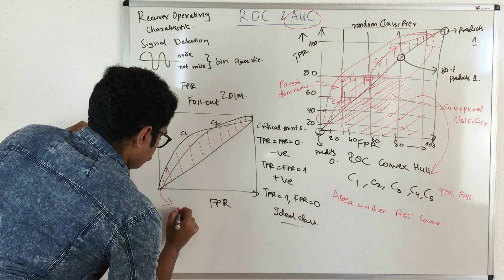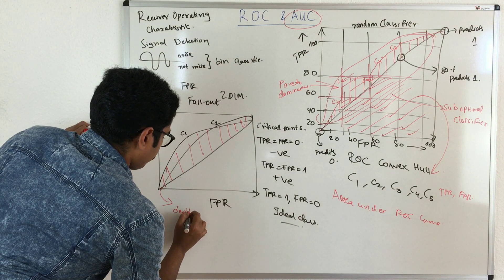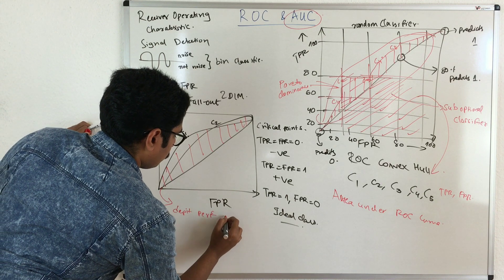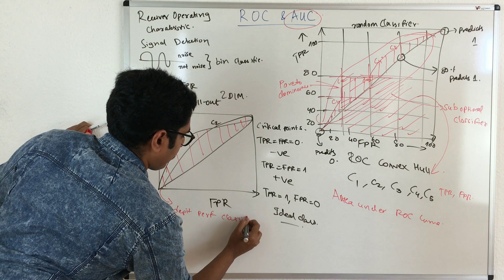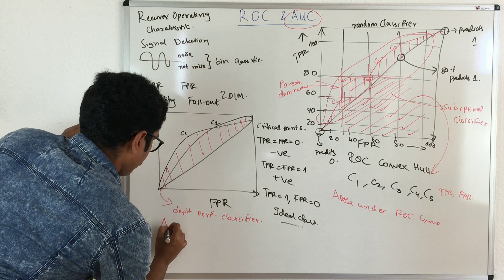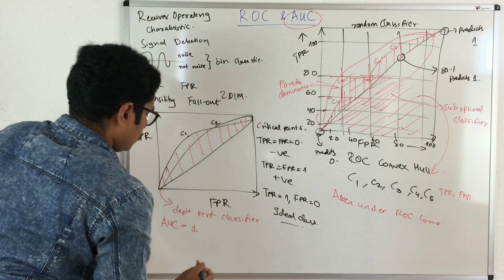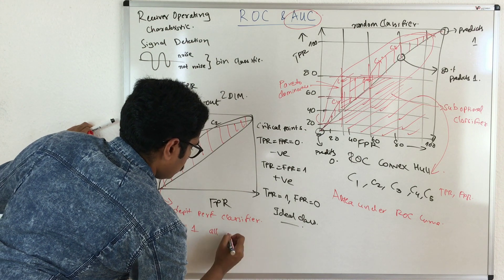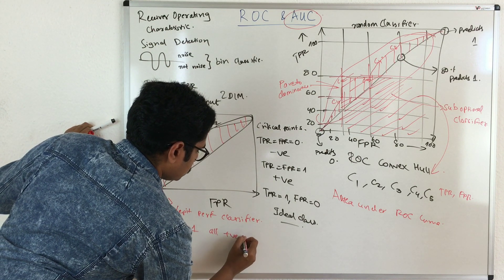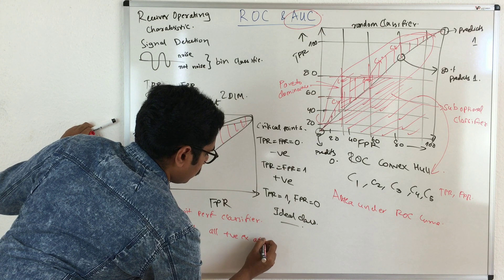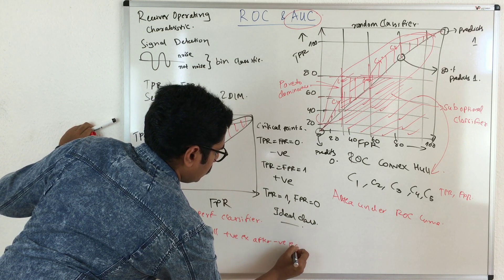Now AUC has some special meanings. AUC is used to depict the performance of your classifier. If you have AUC equal to 1, that means all your positive examples come after your negative examples.